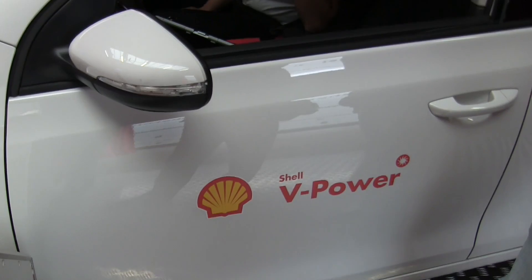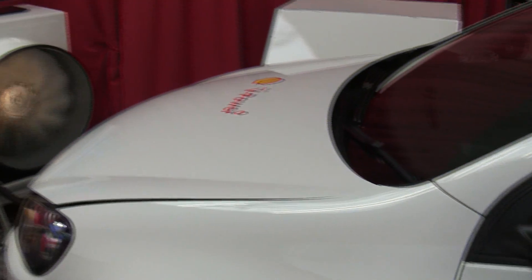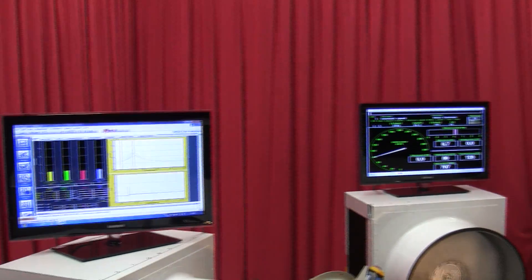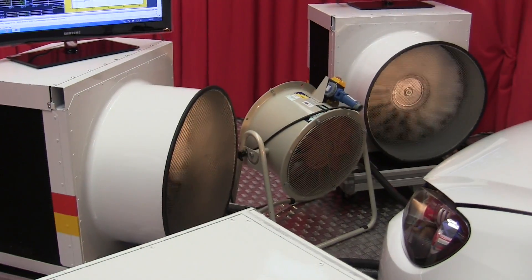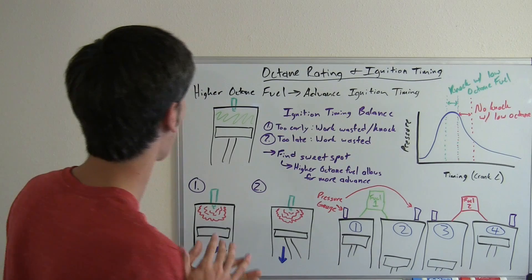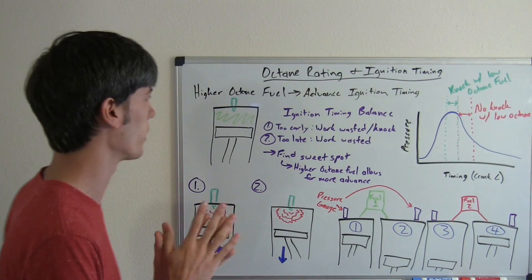Now the cool thing about this video is at the end we're actually going to have an experiment conducted by Shell which actually shows on a Volkswagen Golf TSI how the octane rating will affect that car's performance. So very cool test, but before we go into the test we need to understand the theory.